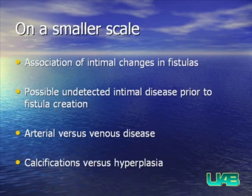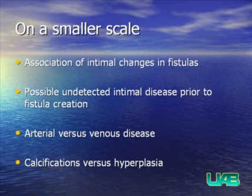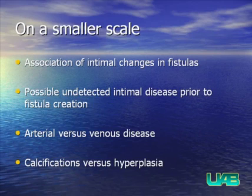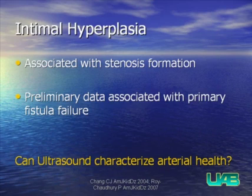Moving beyond macroscopic abnormalities, intimal changes in fistulas have been shown and were thought to be due to increased flow. However, recent research suggests there may be undetected intimal disease prior to fistula creation, meaning some patients may be predisposed to failure before the fistula is placed. Questions remain about whether arterial inflow or venous disease is most important, and whether hyperplasia versus plaques and calcifications have differing effects. Intimal hyperplasia has been associated with stenosis formation, and preliminary data suggest hyperplasia itself is associated with fistula failure.